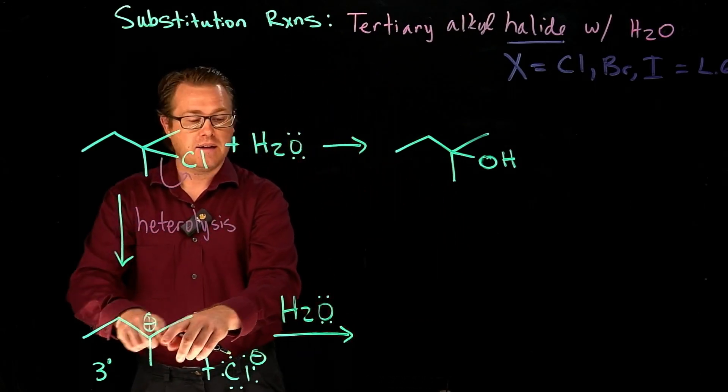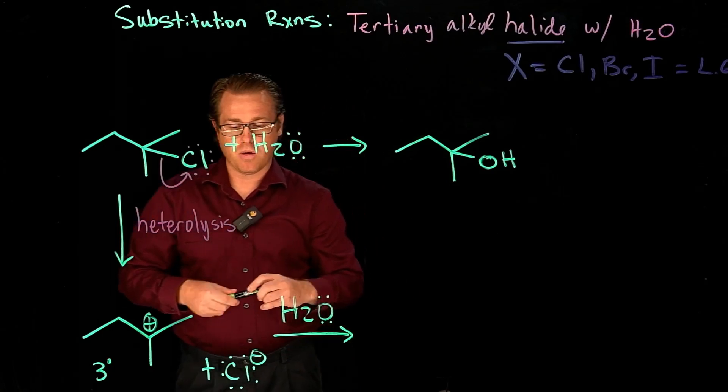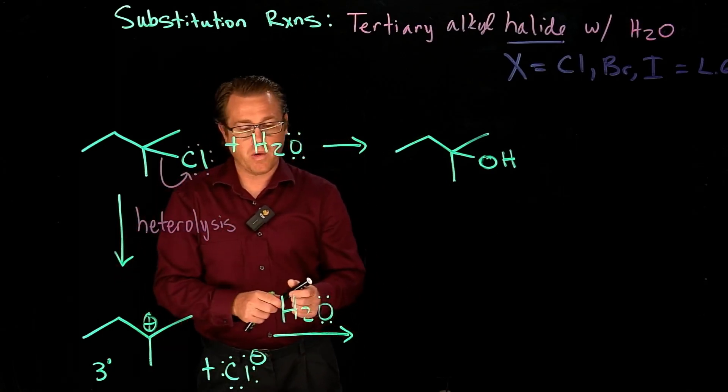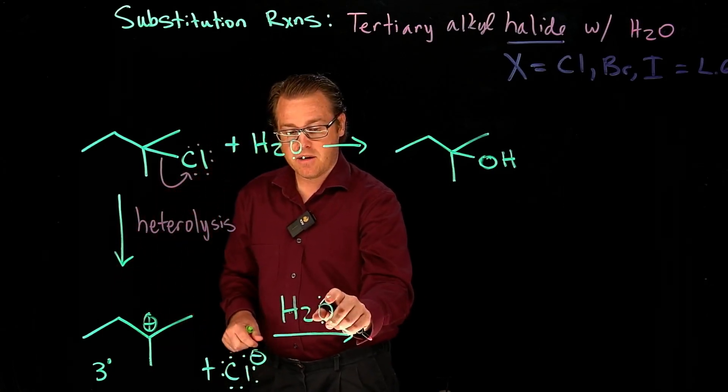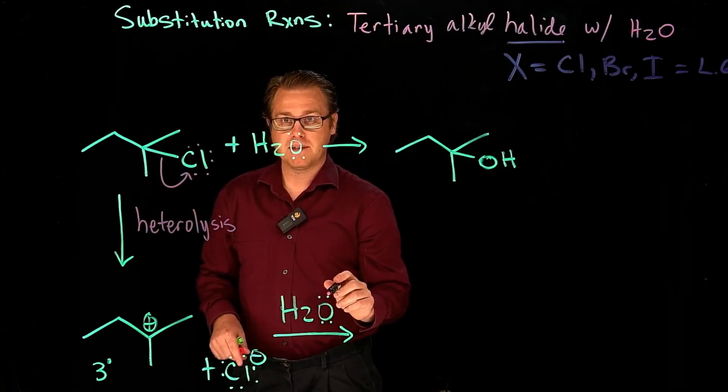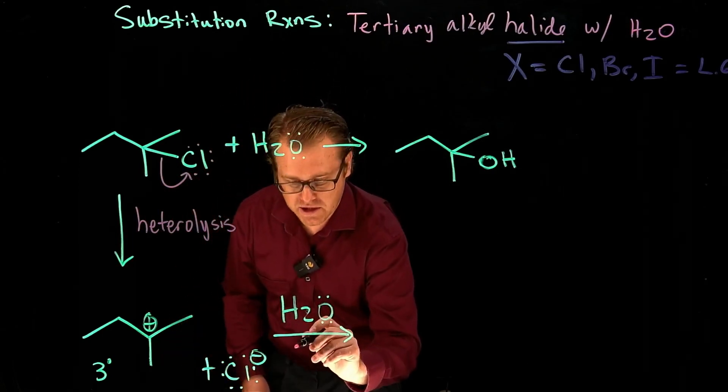We have a carbocation that's going to be electron-poor. And so we are going to now take this electron-rich species, attack the electron-poor species by a coordination step.